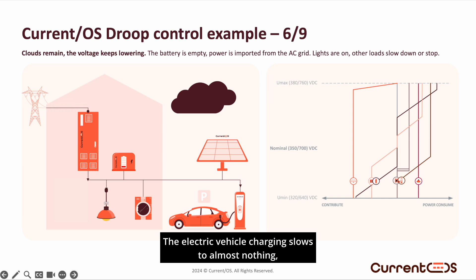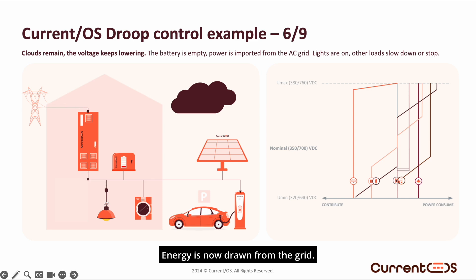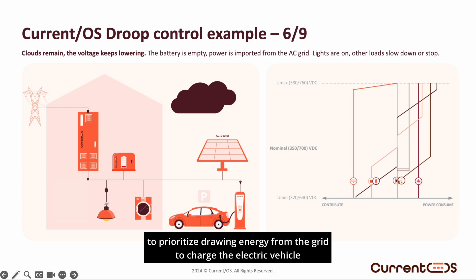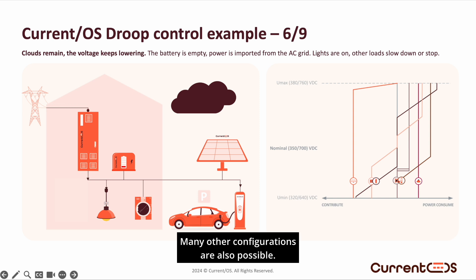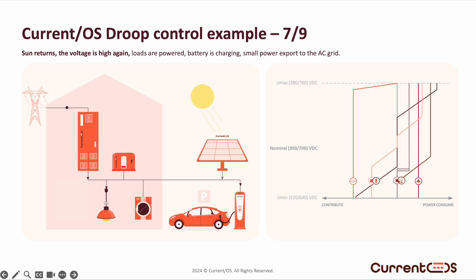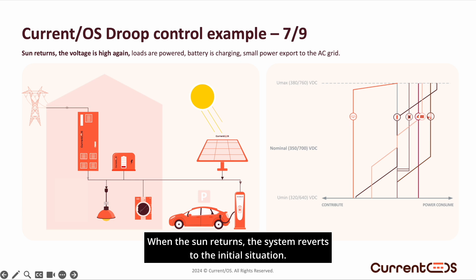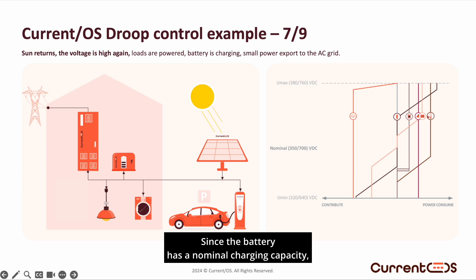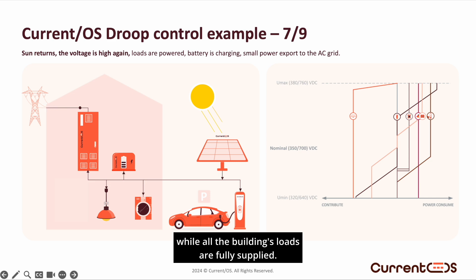The electric vehicle charging slows to almost nothing, while the lighting continues to operate at nominal power. Energy is now drawn from the grid. As a reminder, this is just an example. Through software, the system could be programmed differently — for instance, to prioritize drawing energy from the grid to charge the electric vehicle if it's needed for immediate use. Many other configurations are also possible. When the sun returns, the system reverts to the initial situation: the photovoltaic panels resume full contribution, providing enough power to recharge the battery. Since the battery has a nominal charging capacity, any surplus energy is exported to the public grid while all the building's loads are fully supplied.